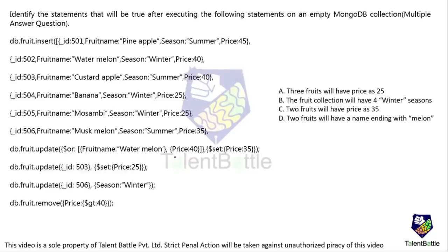The first question: identify the statements that will be true after executing the following statements on an empty MongoDB collection. This is a multiple answer question, so more than one option needs to be chosen. DB fruit insert: ID 501, fruit name pineapple, season summer, price 45 — this record will be inserted into the MongoDB collection.